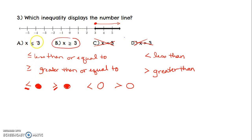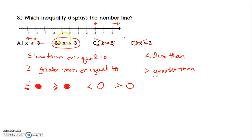Another way: as long as your variable is written first, you can draw a line up to the symbol and it'll show you which way the arrow points. So less than or equal to — you'd be going to the left with a closed circle. Greater than or equal to — as long as the variable is written first — you draw a little line up to it and it shows your arrow going to the right, with a closed circle.